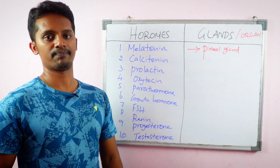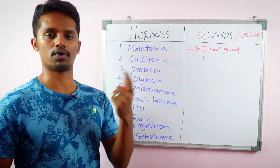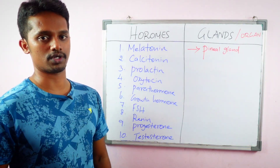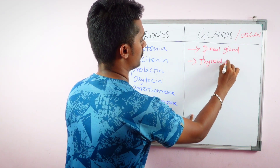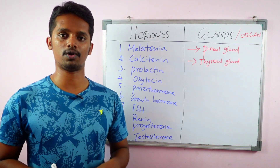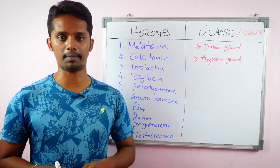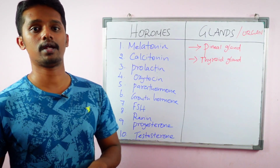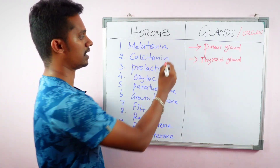The second hormone is Calcitonin, produced in the Thyroid gland. Note the distinction: the thyroid hormones are T3 (Triiodothyronine) and T4 (Tetraiodothyronine, also called Thyroxine). Calcitonin is a separate hormone also produced in the Thyroid gland.